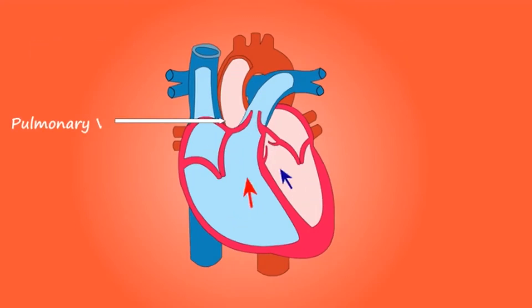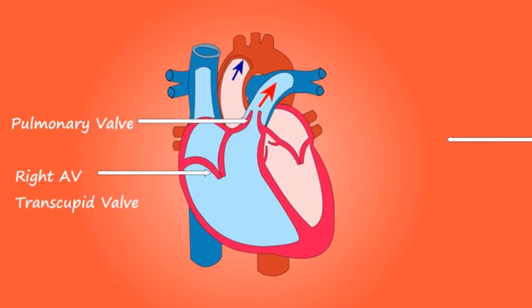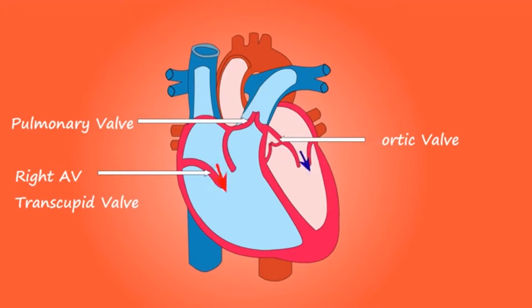There are valves between the chambers which open and close like doors. The valves control the flow of blood from one chamber to another and to the rest of the body. The valves ensure that blood flows throughout the heart in one direction only.